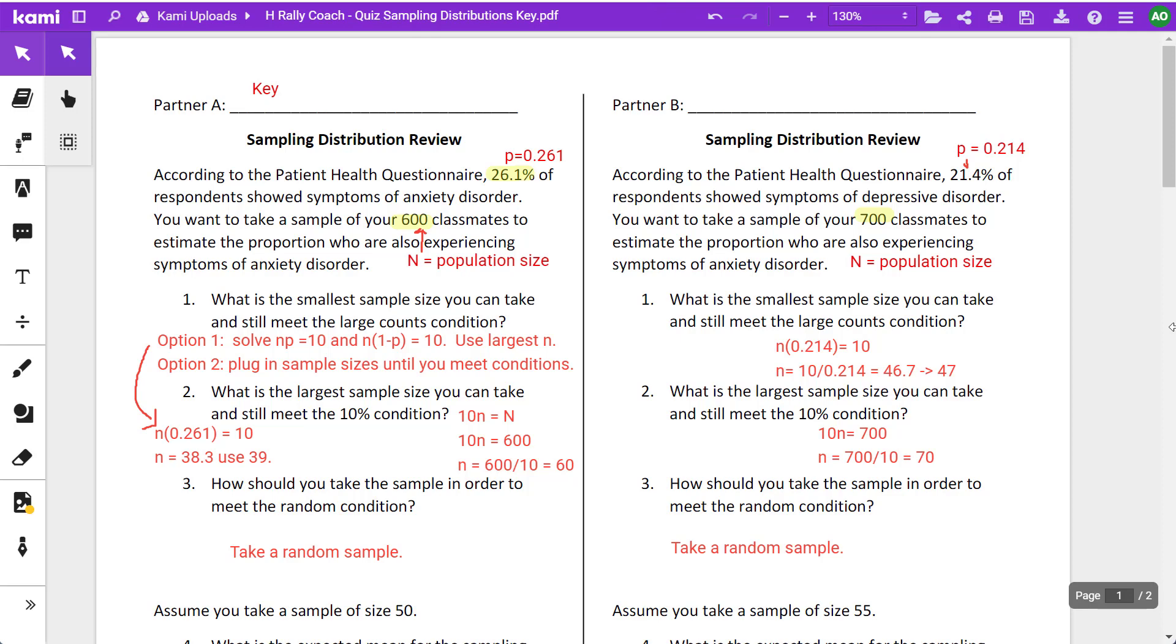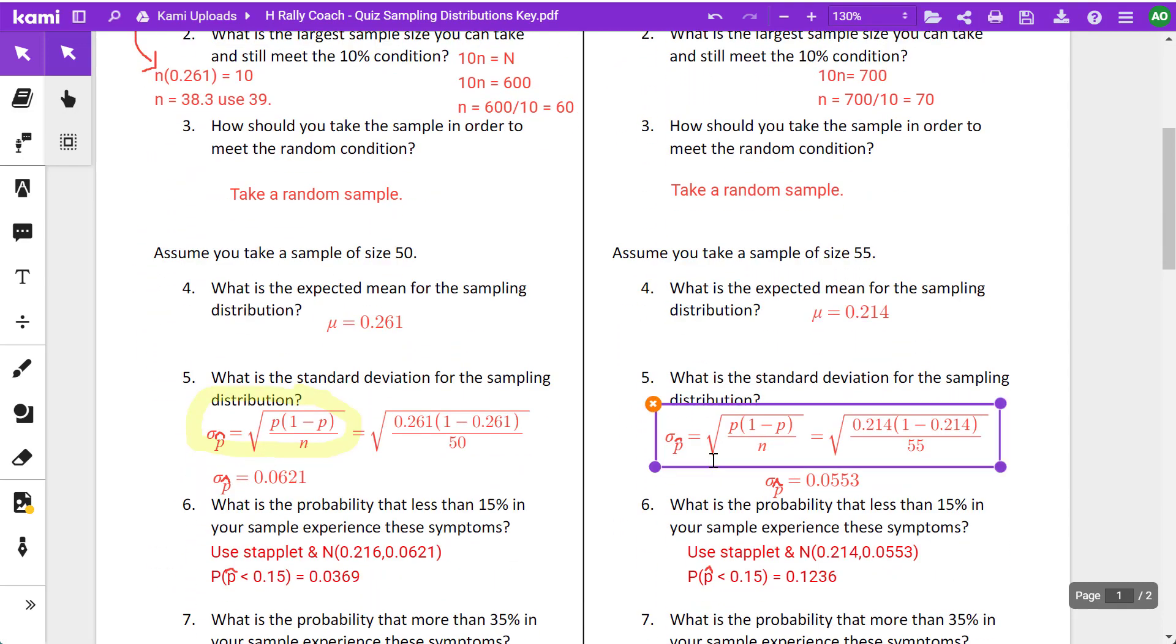The smallest sample size to meet the large counts condition, that's where N times P and N times one minus P are 10. Since P is small, I just have to do N times P. So 0.214 times N is 10. Divide both sides by 0.214, I get 46.7. Always round up. You notice here I had 38.3, but I use 39. So you always round up here. And largest sample size, as long as I don't exceed 10% of 700, we're good. So that's 70. And we take a random sample.